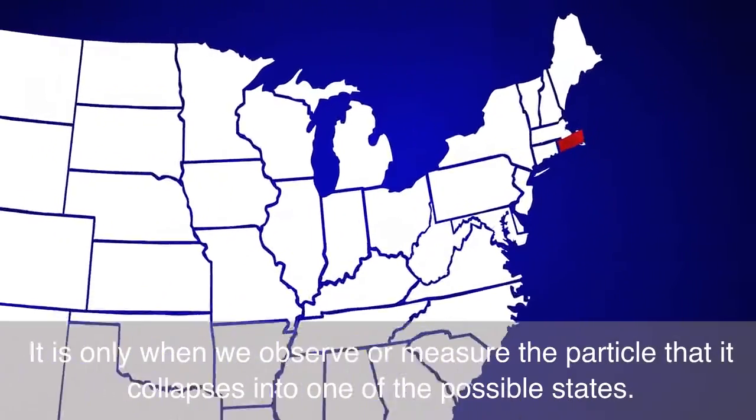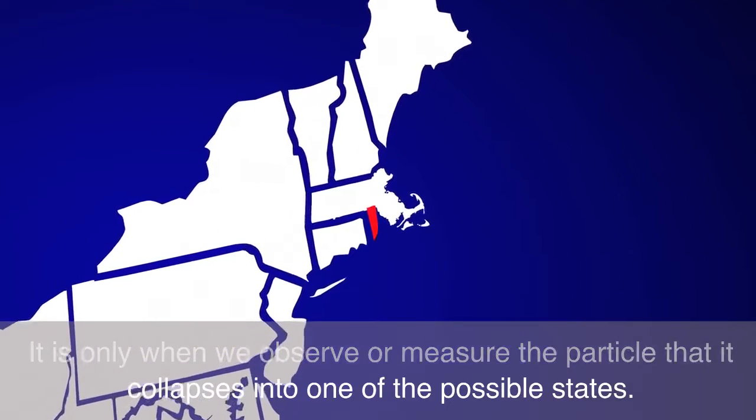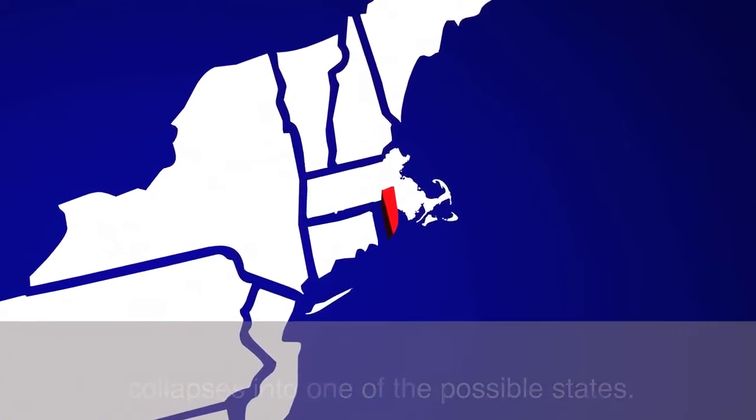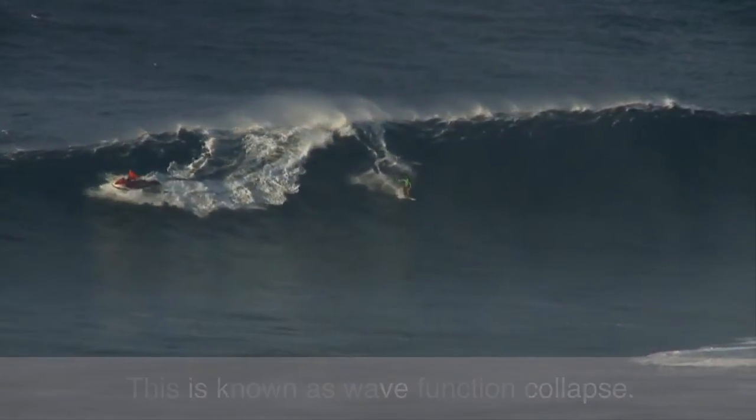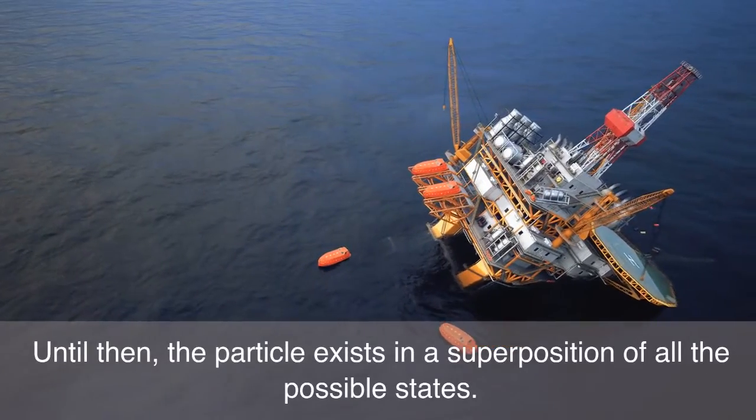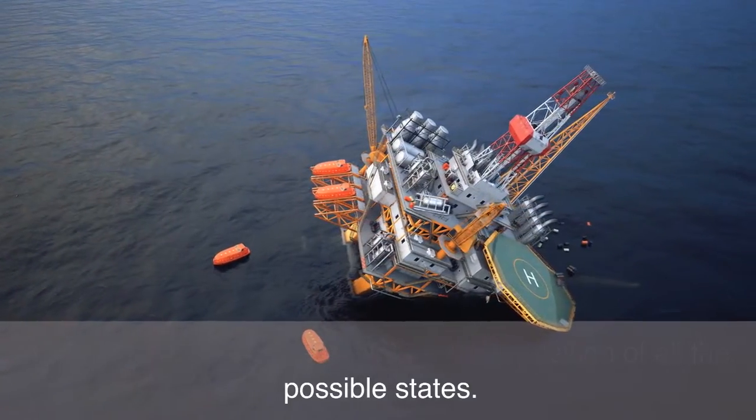It is only when we observe or measure the particle that it collapses into one of the possible states. This is known as wave-function collapse. Until then, the particle exists in a superposition of all the possible states.